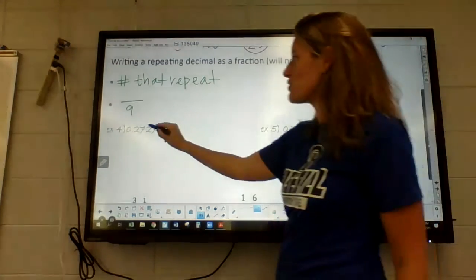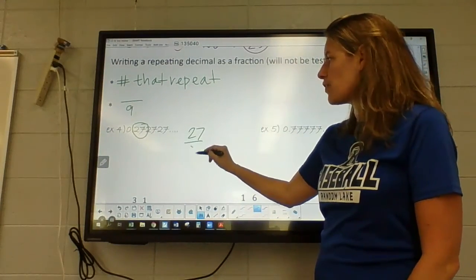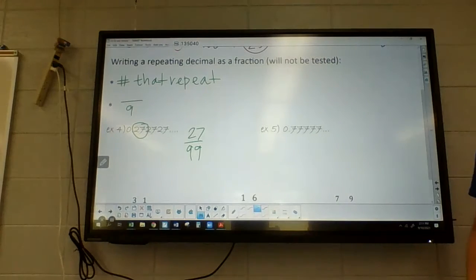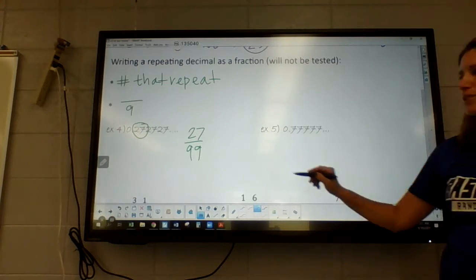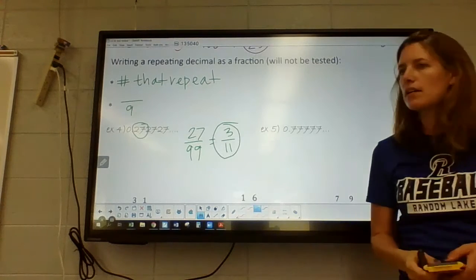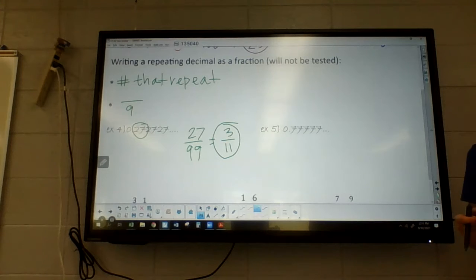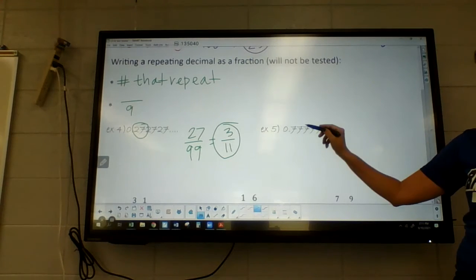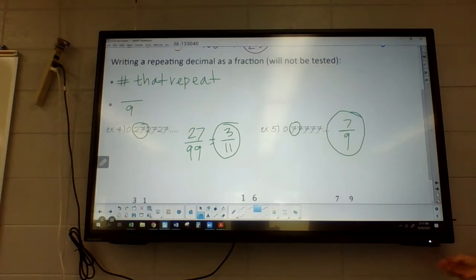So, the 27, there's two values that repeat, so that's going to go over 99. So, if I check 27 over 99, it's going to be that decimal, and then I just want to simplify it. So, those can both be divided by 9, so that ends up being 3 over 11. So, that's the same fraction. Now, the 7 only repeats, the same number repeats one, so the same number over and over again. So, this just goes 7 over 9, and then that would be it. That would be 0.7 repeating.